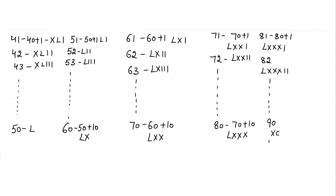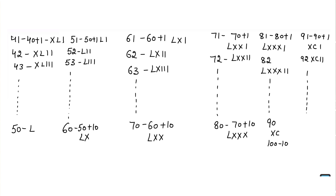90 can be written as 100 minus 10, which means it is written as XC. 91 can be written as 90 plus 1, which is XCI. 92 is XCII, and so on. 100 can be written as C.